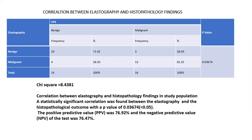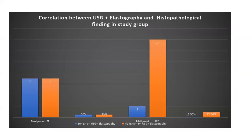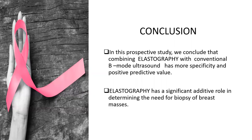The statistical test used was the chi-square test. A statistically significant correlation was found between the elastographic and histopathological outcomes with a p-value of 0.03 (less than 0.05). The positive predictive value was 76.92% and negative predictive value was 76.4%. The correlation between combined conventional USG and elastography with histopathology was also significant, with a p-value of 0.02, a combined PPV of 77.78%, combined NPV of 66.6%, and overall accuracy of 70%. The conclusion was that combined elastography with conventional ultrasound has more specificity and positive predictive value compared to elastography alone, making it a significant additive tool for determining the need for biopsy.